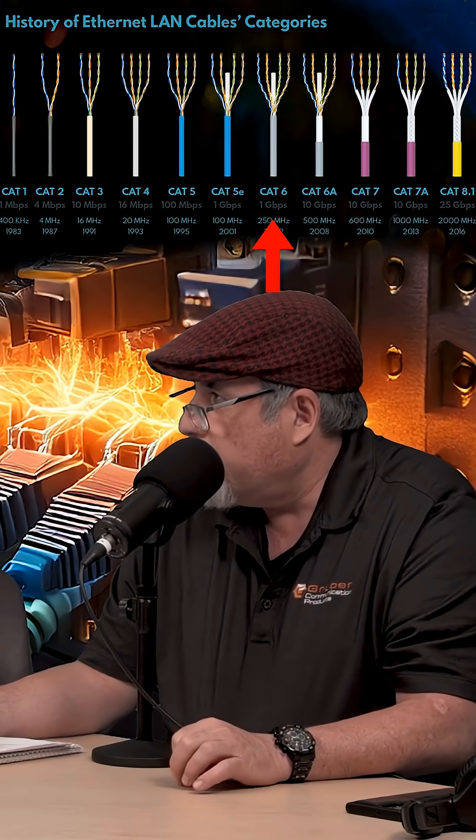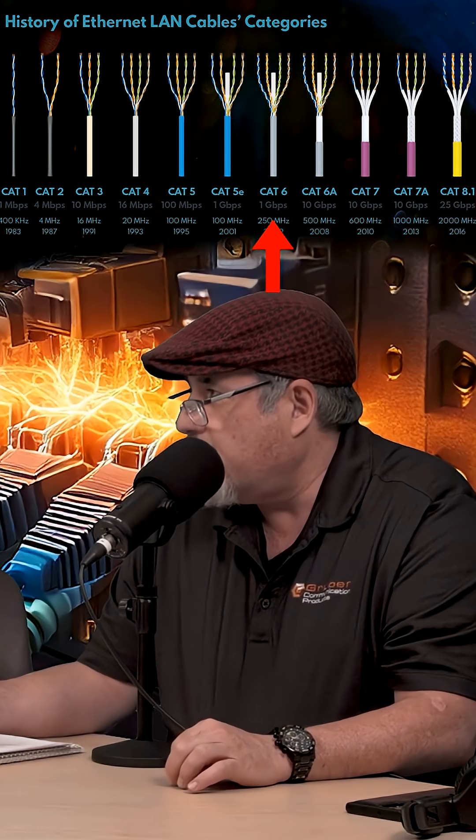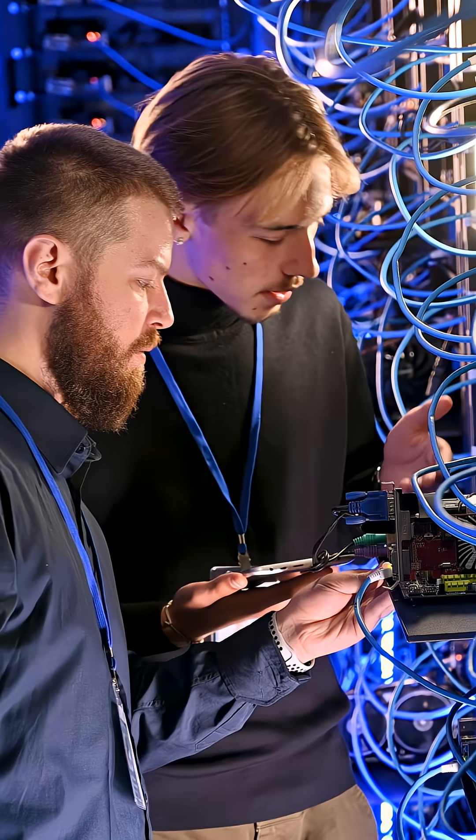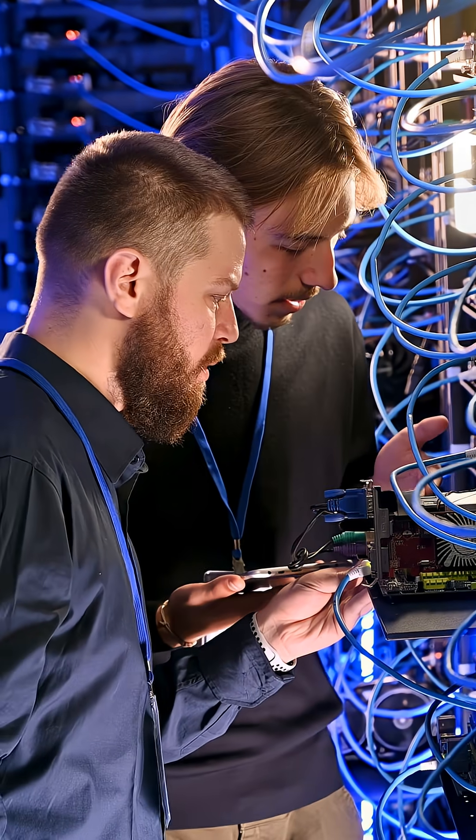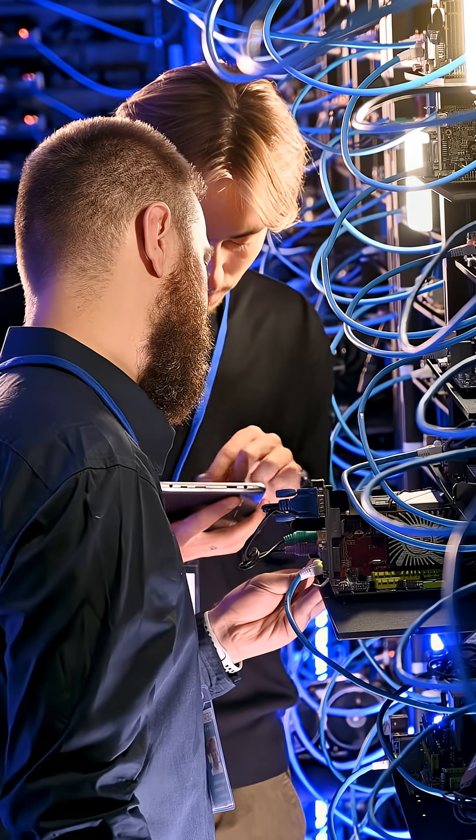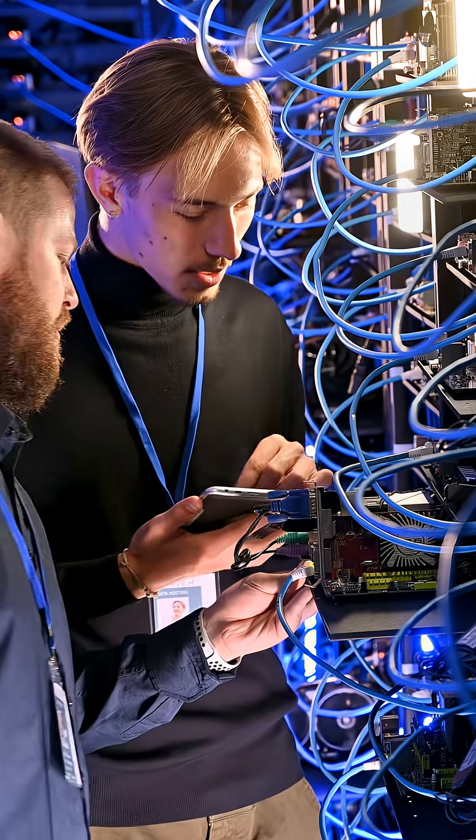Cat 6 works on a Cat 5e network — everything is backwards compatible, which is important to remember with copper cabling. You can take a step back but not jump up. So if your switches are 5e, Cat 6 cable will work. But if it's a Cat 6 switch, Cat 5e will not work.